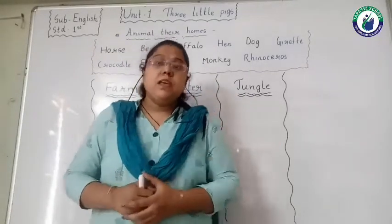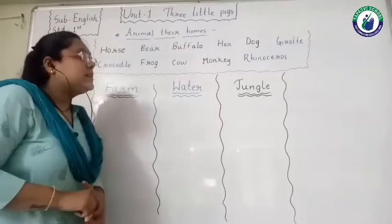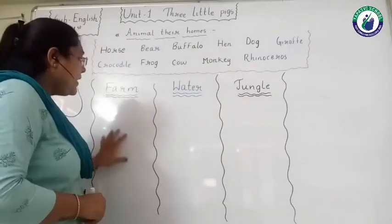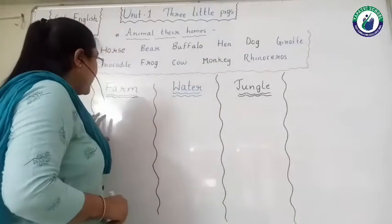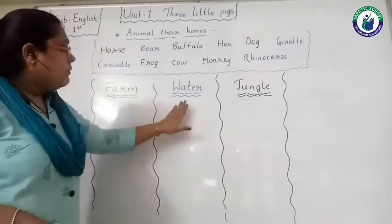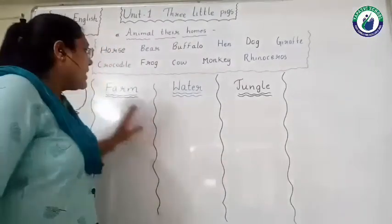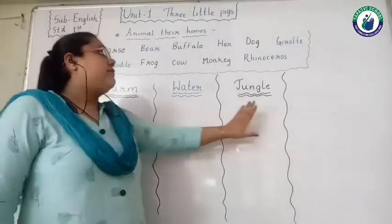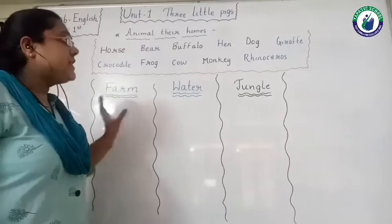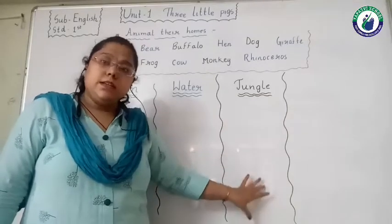Let's start our activity. Here you can see some animal names written in a red color box. And I have made three columns — one is for farm animals, one is for water animals, and one is for jungle animals. We will discuss which animal goes in farm, which goes in water, and which goes in jungle. The animal which lives in the farm we write here, which lives in water we write here, and which lives in the jungle we write here.